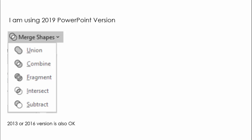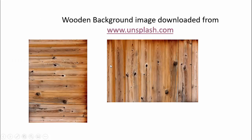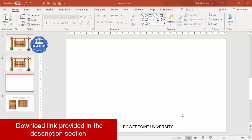I'm using PowerPoint 2019 for this design. You'll need the Subtract option which is under Merge Shapes — this is only available in the latest versions of PowerPoint, not in 2003 or 2007. I've used two wooden images downloaded from Unsplash.com, so you can just download those images and use them for this slide.